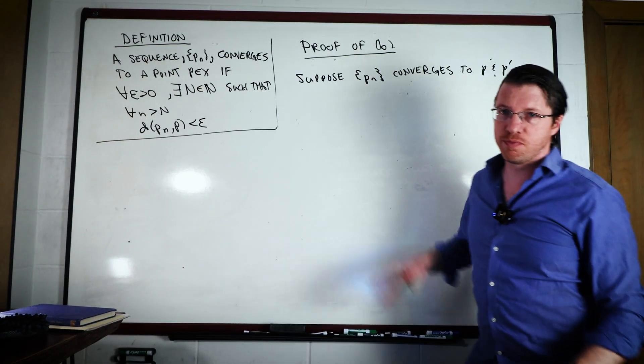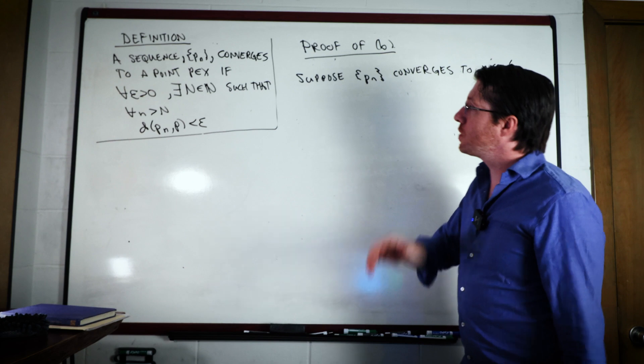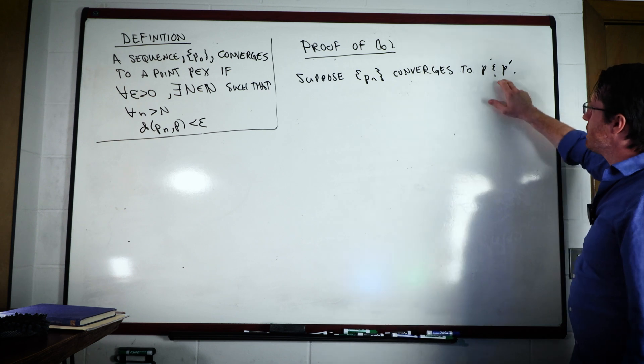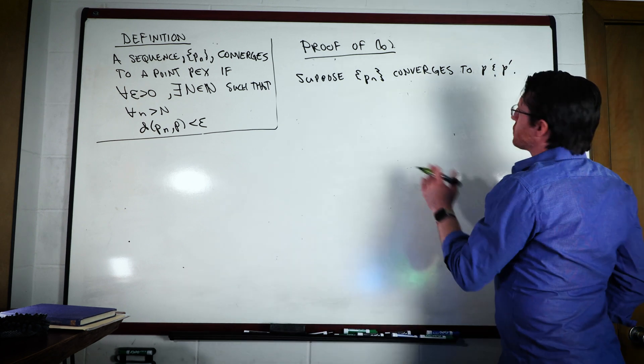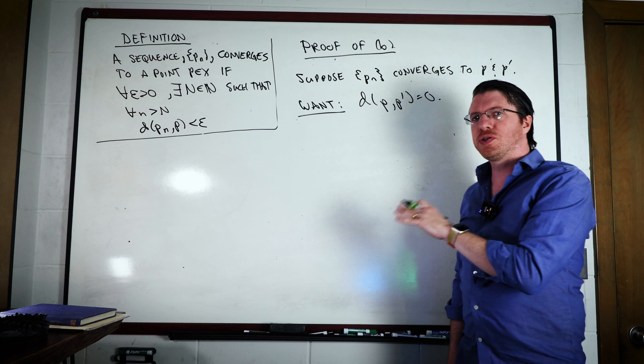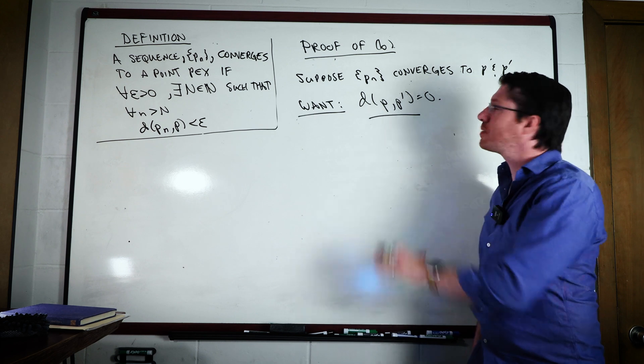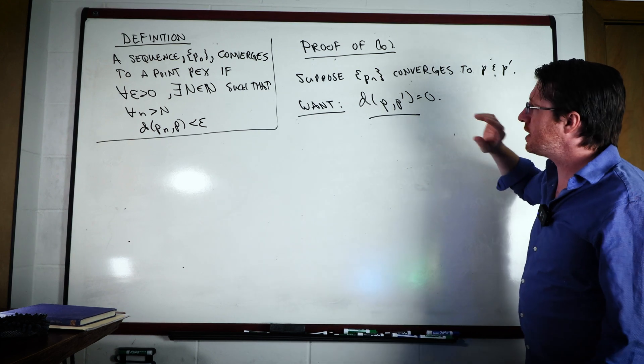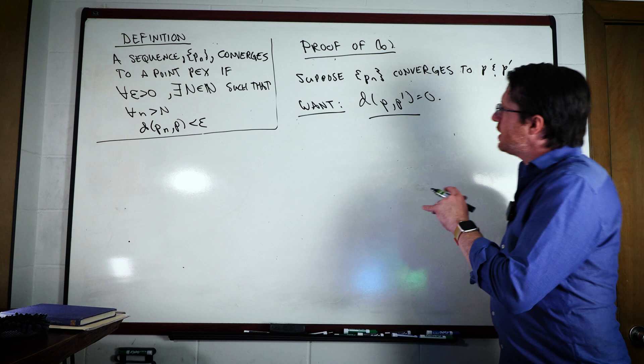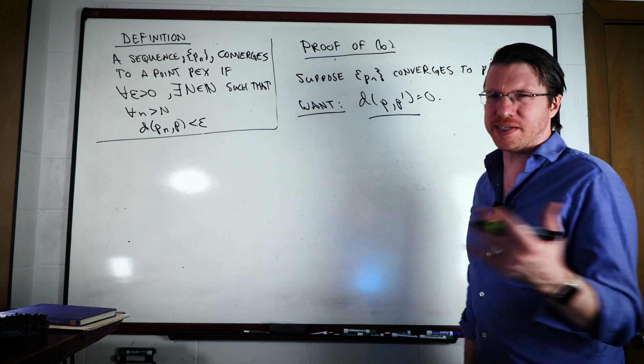Okay, so I wanted to show you the proof of part B, and this is fairly straightforward, but what it does is it invokes the triangle inequality in a way that you're going to use it a lot. And so it's a good idea to go ahead and talk about this at least a little bit. So we're going to suppose that PN is a sequence that converges to P and P prime inside of some metric space X. And what we're going to do is we're going to try to show that the distance between P and P prime is equal to zero. And the way we're going to do that is that we know that the distance between P and P prime has to be positive. That's the definition of the metric. The way we'll show it zero is we'll show that it is going to be less than any positive number. And when that happens, then that means that it is going to be zero.